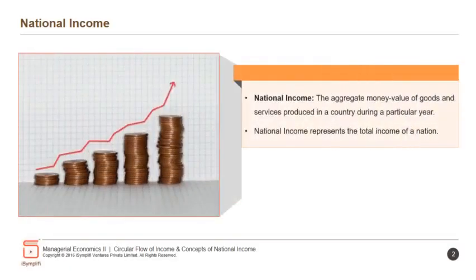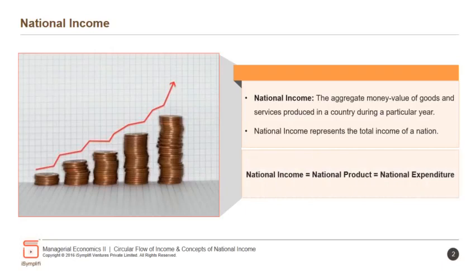National income is the aggregate money value of goods and services produced in a country during a particular year. It represents the total income of a nation. Thus, national income equals national product equals national expenditure.